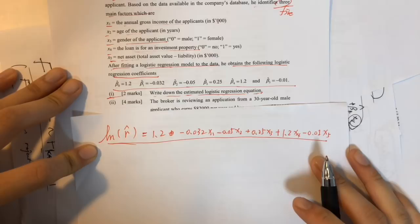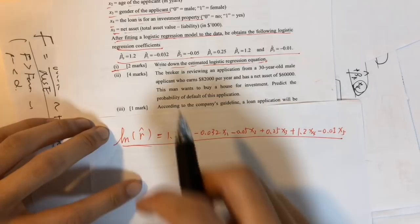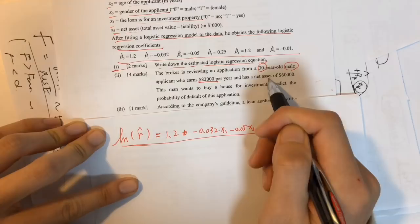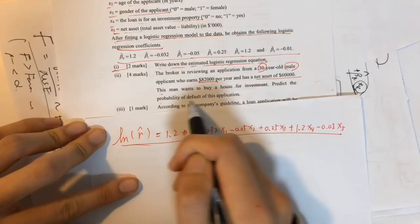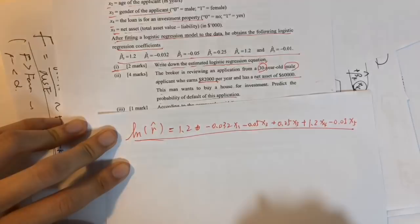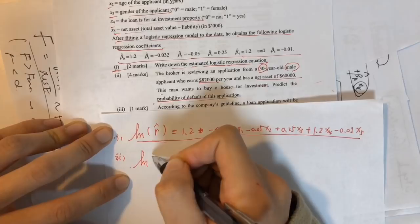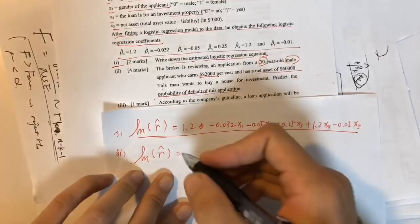For question two, the broker is reviewing an application from a 30-year-old male applicant who earns $82,000 per year, has net assets of $60,000, and wants to buy a house. We need to predict the probability of default for this application. To find the probability, we first calculate log(r̂).